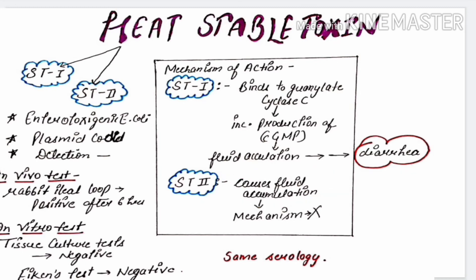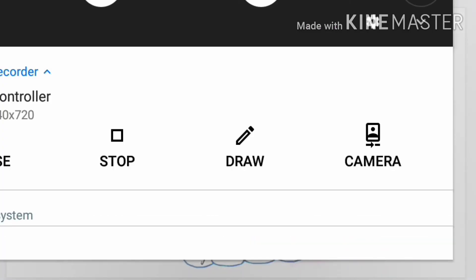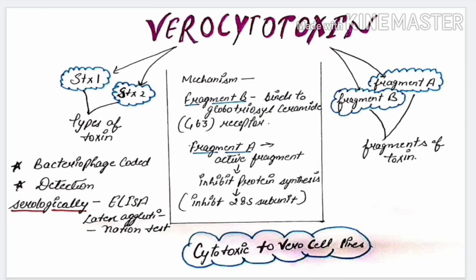The last toxin is the verocytotoxin, so called because it is cytotoxic to Vero cell lines. It is divided into two types: STX1 and STX2. It has two fragments, fragment A and fragment B.